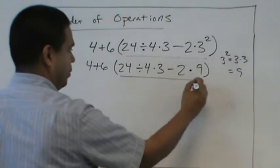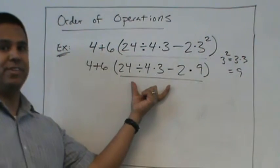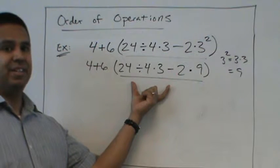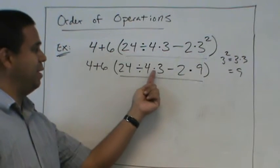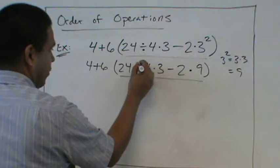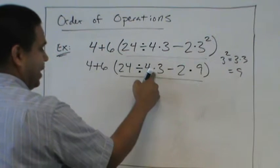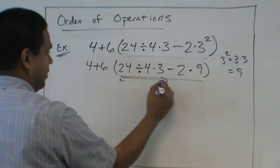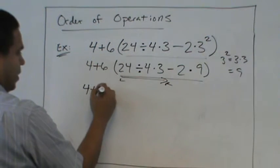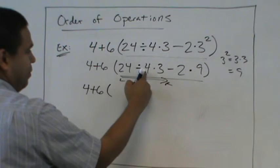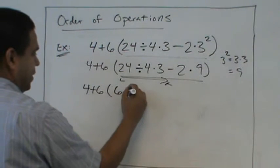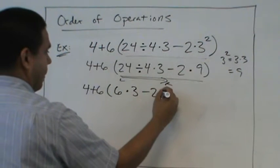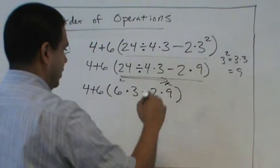So again, in the parentheses, what would we do first? Divide. We need to divide before we multiply. Why would we divide before multiplying? Because we're going left to right. So 24 divided by 4? 6. Very good.